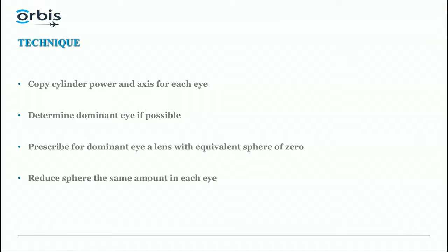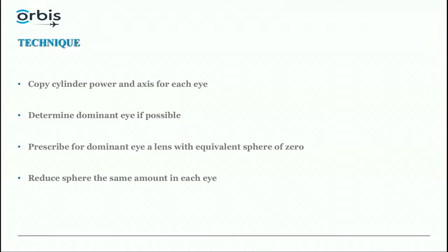Here is the technique on paper. First, copy the cylinder power and axis for each eye — we are going to fully correct the astigmatism. Second, determine the dominant eye if possible, because the dominant eye is the one that controls accommodation. You can measure dominance by pointing, by Worth four-dot, or by a circle test, but practically speaking it is usually easier to estimate from the prescription.